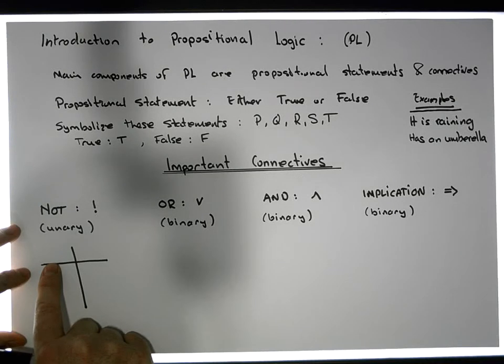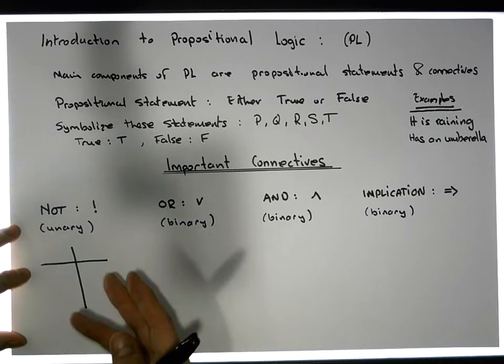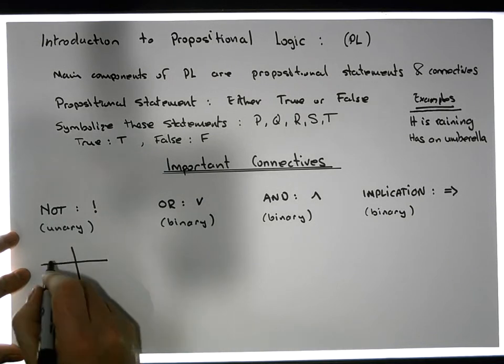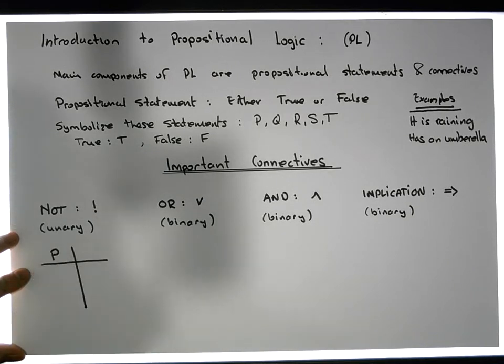Usually what's listed on the left-hand part is the propositions that the operator is going to be applied to. In relation to the unary operator NOT, it acts on a single proposition, so let's call this proposition P.